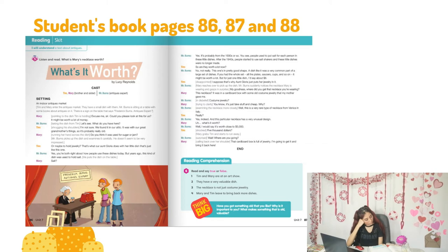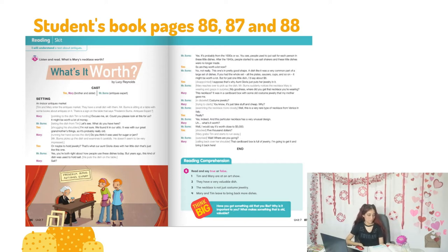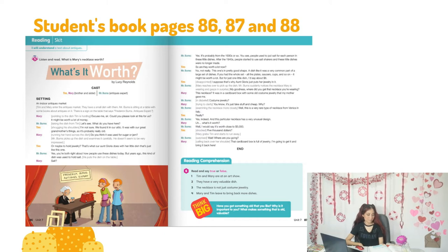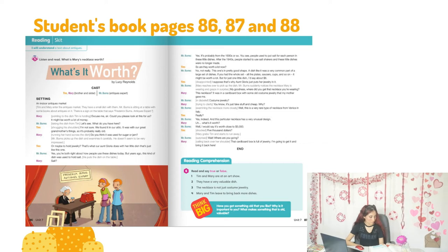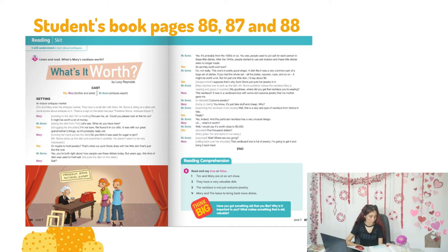Mr. Burns puts the dish on the table: 'Salt — yes. It's probably from the 1930s or so. People used to put salt for each person in these little dishes. After the 1940s, people started to use salt shakers and these little dishes were no longer made.' Tim asks: 'So are they worth a lot now?' 'No, not really — this one's in pretty good shape, but for just one little dish I'd say about six dollars.' Then Mr. Burns suddenly notices the necklace Mary is wearing and gasps: 'My goodness, where did you get that necklace?'